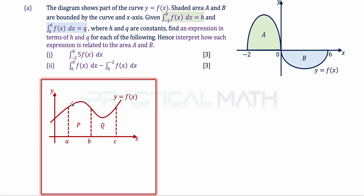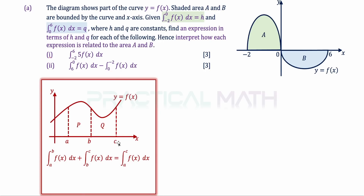In part 1, we need to find the integral of 5·f(x) dx from -2 to 6. A useful property of definite integrals is that if A, B, and C are arranged in order on the x-axis, the integral from A to B plus the integral from B to C equals the integral from A to C. That is, integrating from A to C is the same as A to B plus B to C.